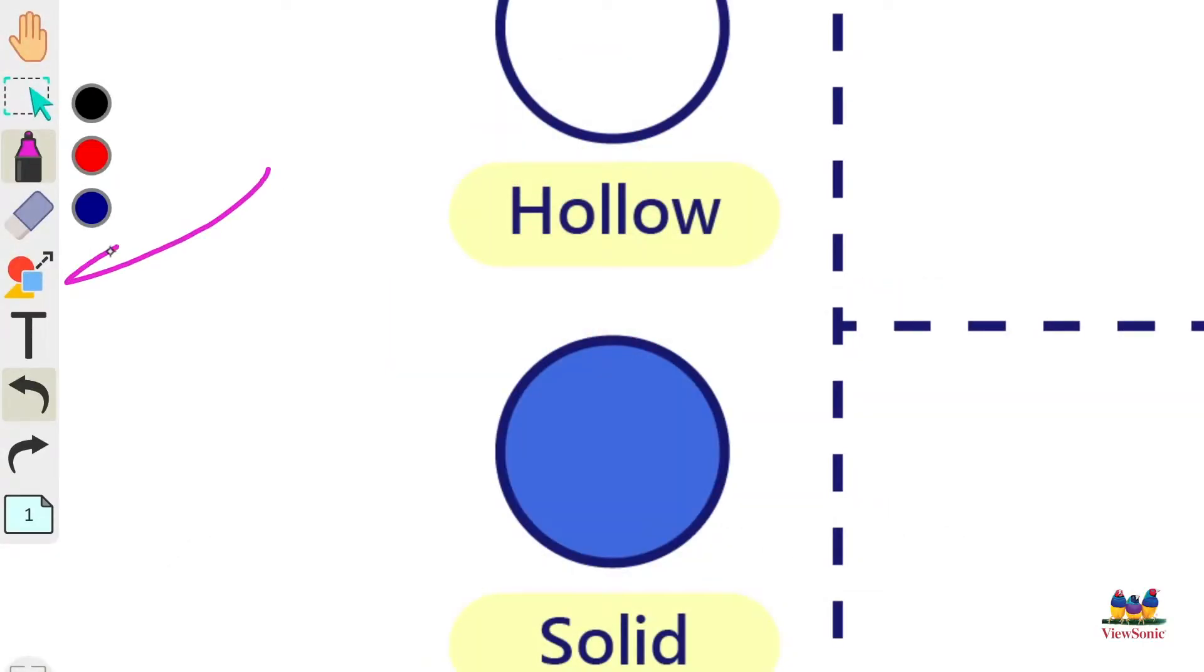To get started with shapes, find the shape icon in the main toolbar. When you click on it, it's going to activate the rectangle tool and three dots are going to appear.